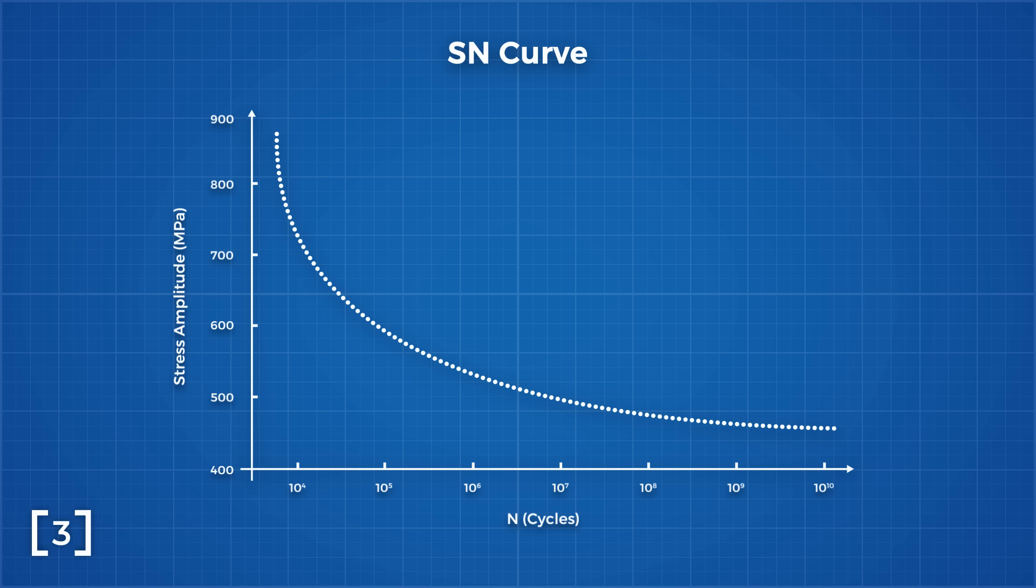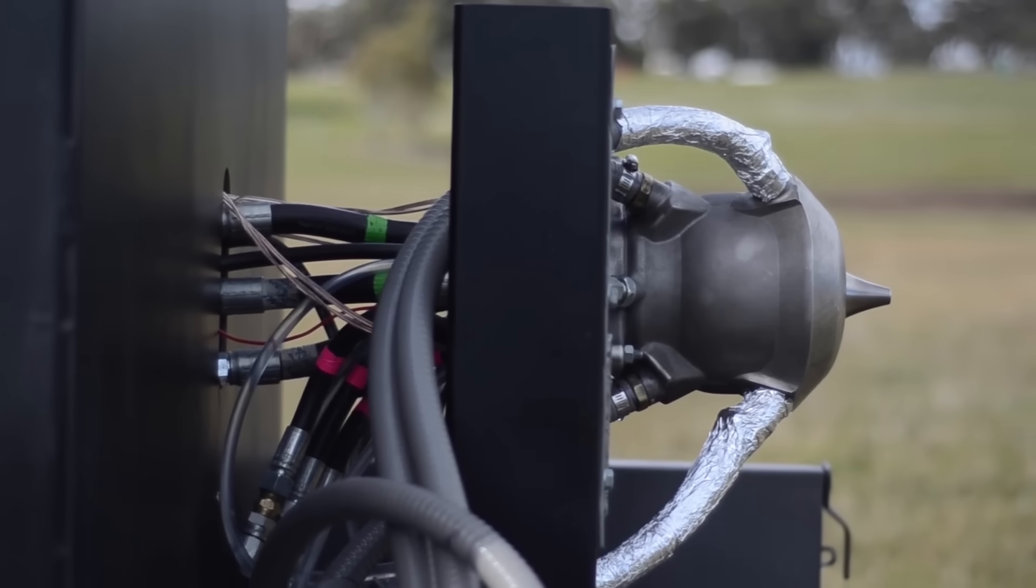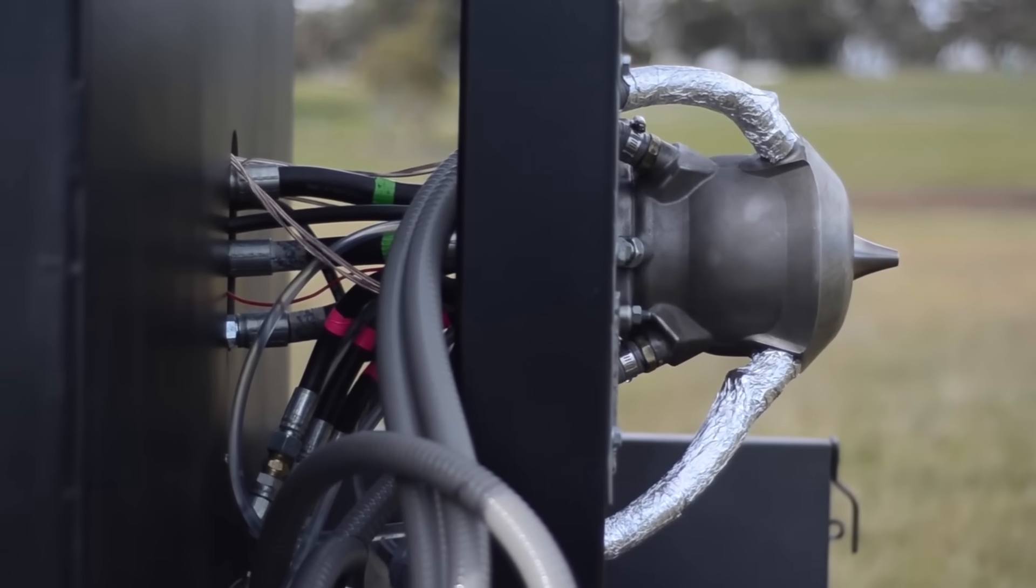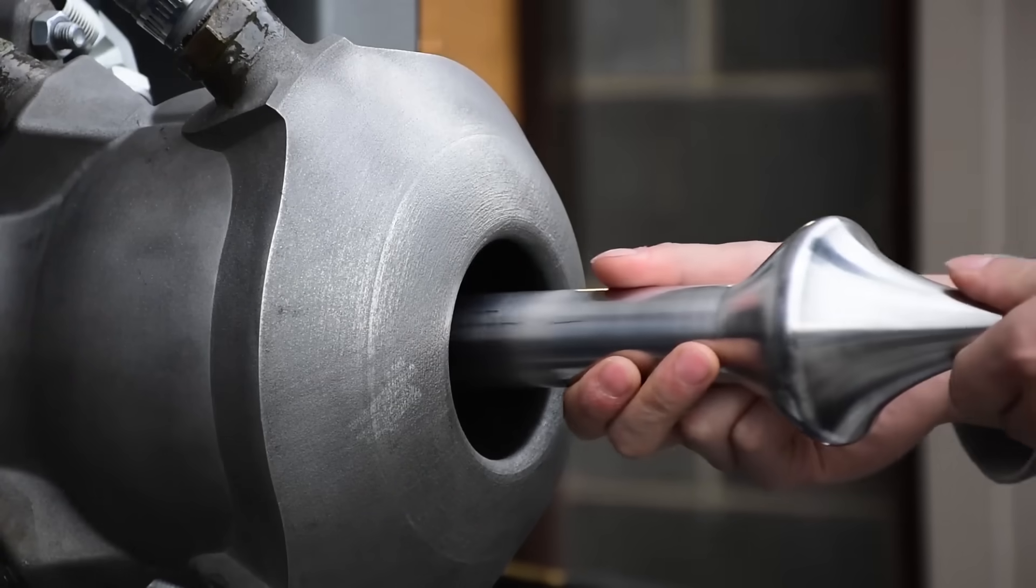For traditionally machined titanium it looks something like this, whereas for 3D printed parts it looks more like this. Put simply, 3D printed parts fail much sooner, stopping many of the parts from being approved for applications they are best suited for, like aviation.